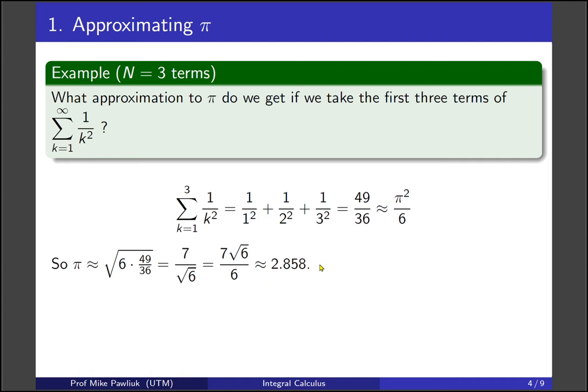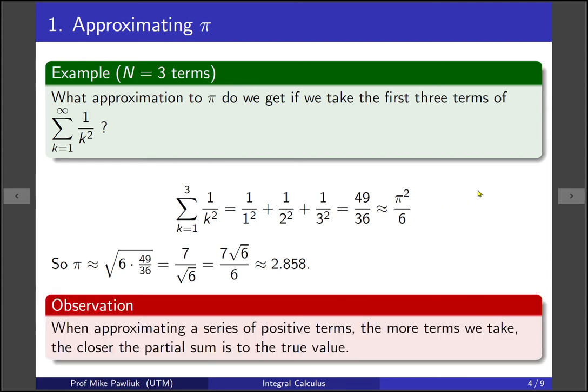So if that's the case, how do we get a better approximation to pi? What can we change about this problem? Well one thing we could do is we could take more terms in our series. So if we added up the first 10 or 20 terms, then we would get closer to pi squared over 6. So here's our observation. When you're approximating a series of positive terms, then the more terms you take, the closer the partial sum is going to be to the actual true value of the infinite sum. So if you want a better approximation, take more terms.